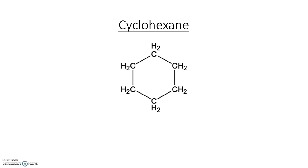Whereas for cyclohexane — which is, by the way, also fluid at 25 degrees Celsius — here you have a ring structure, which limits the motional freedom of the C atoms and H atoms.